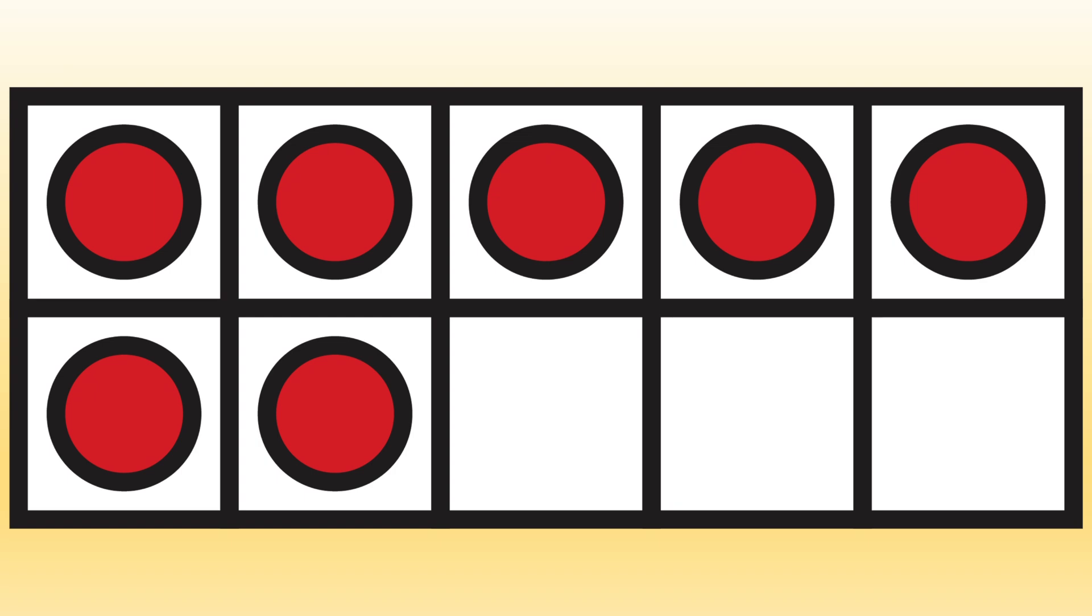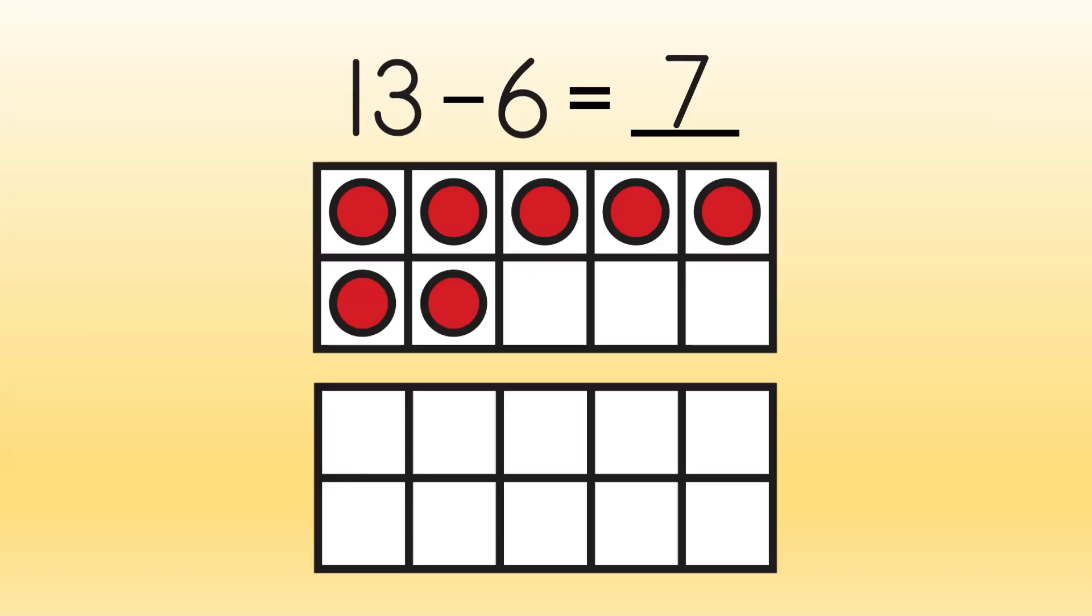1, 2, 3, 4, 5, 6, 7. Or we can use our shortcut and see that we have 5 and 2 more, 6, 7. The difference is 7. 13 minus 6 equals 7.